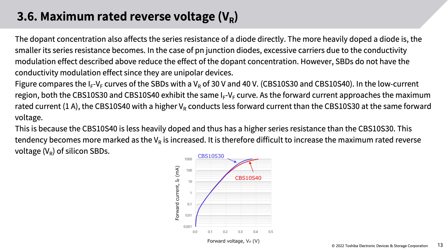Dopant concentration also directly affects the series resistance of a diode — the more heavily doped, the smaller the series resistance. In PN junction diodes, excess carriers from conductivity modulation reduce the effect of dopant concentration. However, SBDs do not have the conductivity modulation effect since they are unipolar devices. A figure compares the IF-VF curves of SBDs with VR of 30V and 40V.